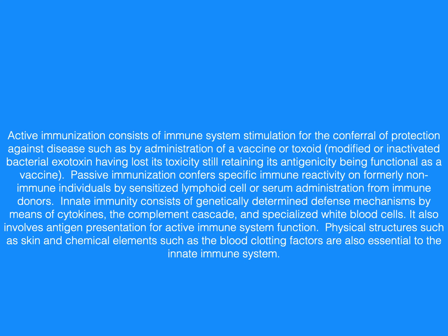Innate immunity consists of genetically determined defense mechanisms by means of cytokines, the complement cascade, and specialized white blood cells. It also involves antigen presentation for active immune system function. Physical structures such as skin and chemical elements such as the blood clotting factors are also essential to the innate immune system.